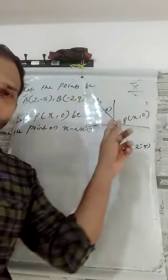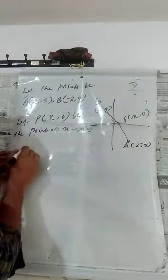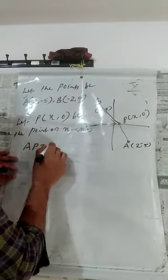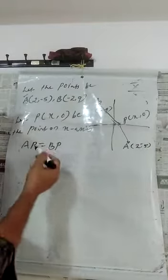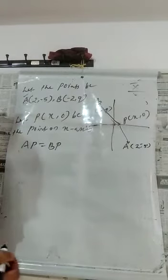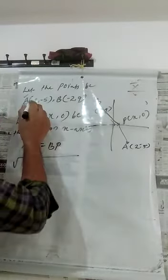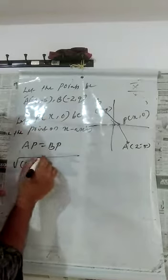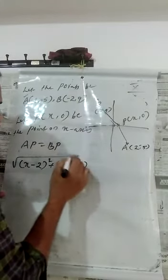Since P(x, 0) is equidistant from A and B, we can write AP = BP because the two distances are equal. Now, how we calculate AP? AP uses the distance formula: x2 minus x1 squared plus y2 minus y1 squared. So AP = √[(x - 2)² + (0 - (-5))²].